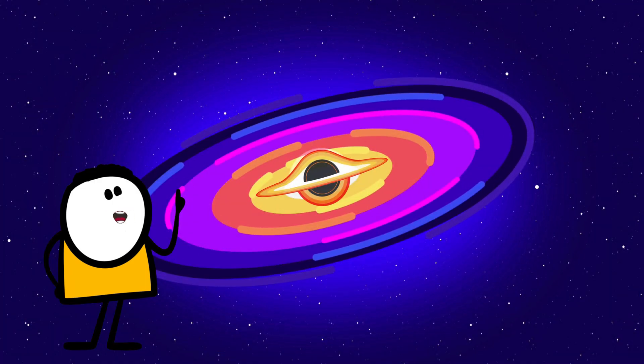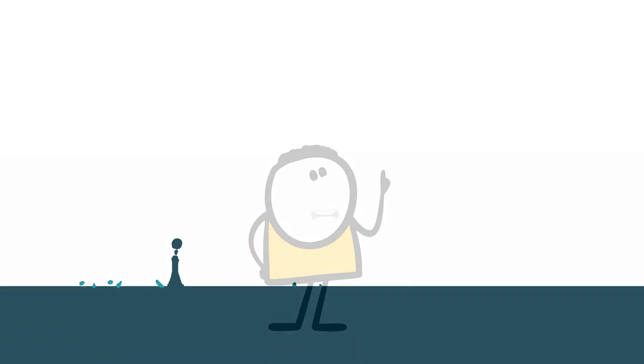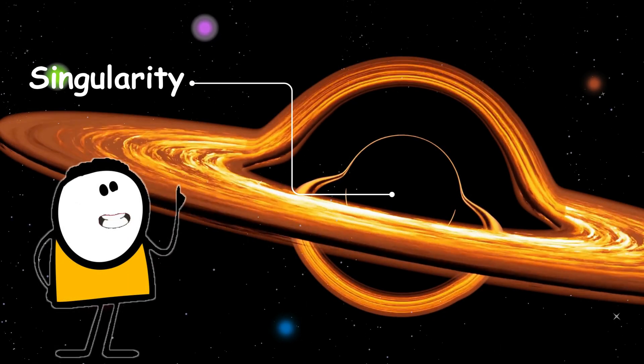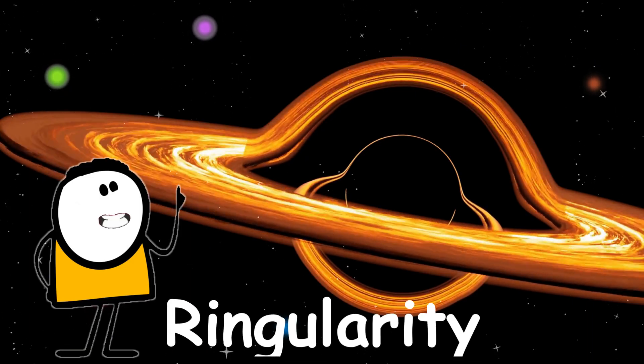Most black holes spin at up to 90% the speed of light. Let that sink in. This adds a new twist, literally. Instead of a point-like singularity, the center becomes a ring. A ringularity.